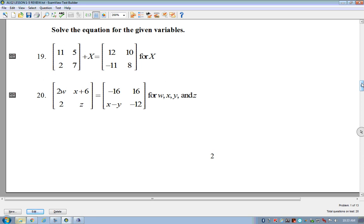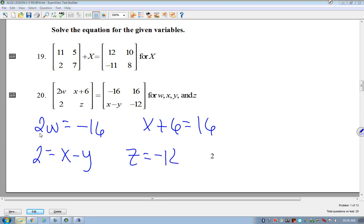So this simply states that these two matrices are equal to each other, correct? So that means 2w equals negative 16. That means x plus 6 equals 16. That means 2 equals x minus, sorry, y. And z equals negative 12. Does that make sense? Okay. Well, that's really handy because we already know then what z equals, right?